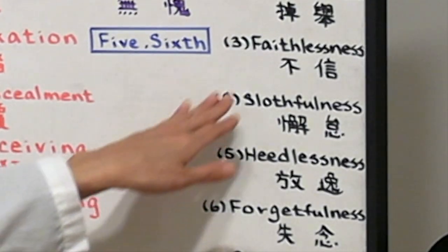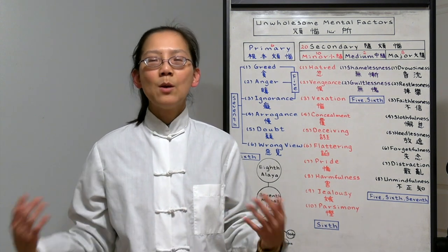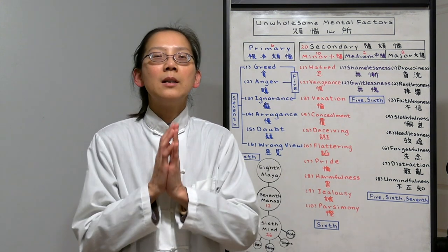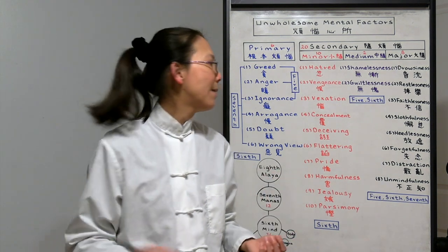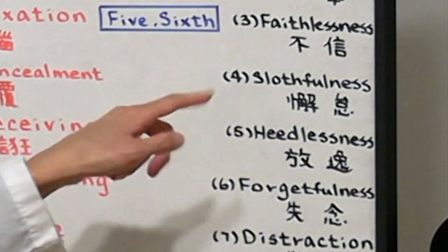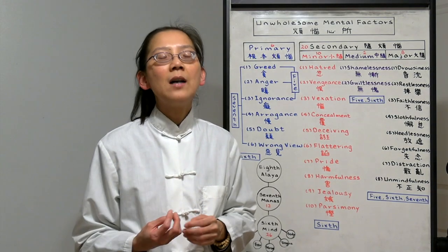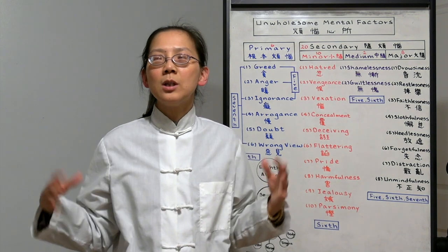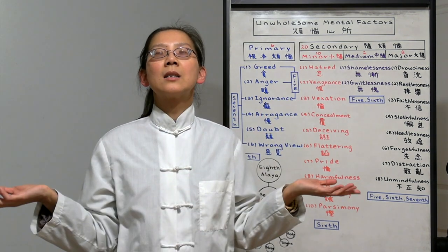Four is slothfulness. Being lazy in our cultivation. We do not want to meditate. We do not want to prostrate to Buddha. We do not want to chant because we are simply lazy. Five is heedlessness. It's kind of like laziness, but it's more not following the rule. We are not watching our mind, our thoughts, our words. We are just letting ourselves go wild.